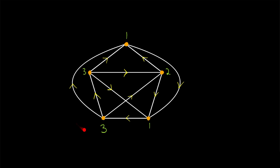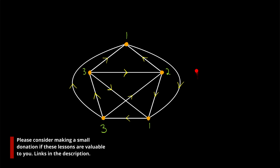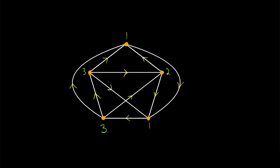Hey look, it's a tournament graph — a directed graph with exactly one arc between each pair of vertices. We've talked a bit about tournament graphs, transitive tournaments, and did a fun proof. I'll leave links to all that stuff in the description.